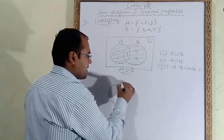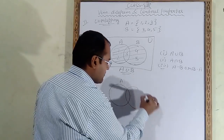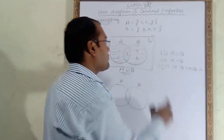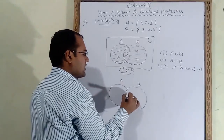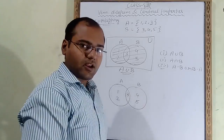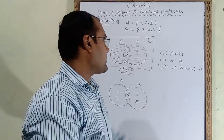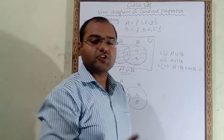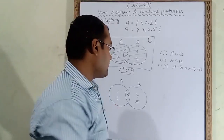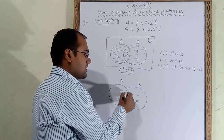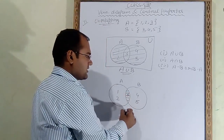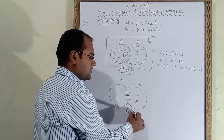For A intersection B in the overlapping case, draw the same overlapping figure with 3 in the middle, 1 and 2 in A's exclusive part, and 4 and 5 in B's exclusive part. Intersection means common elements. The common element is 3. So we shade only the middle overlapping part to show A intersection B.